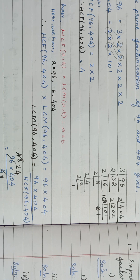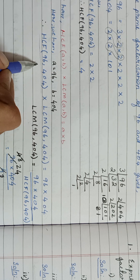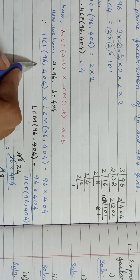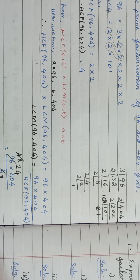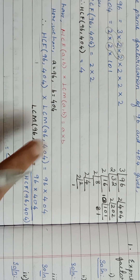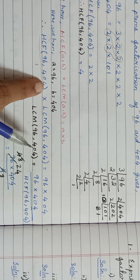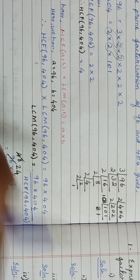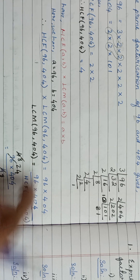When HCF comes to the right hand side, multiplication converts to division — it comes in reciprocal. So HCF of 96 and 404, which was multiplying, comes to the denominator. So you get 96 × 404 divided by HCF(96, 404).